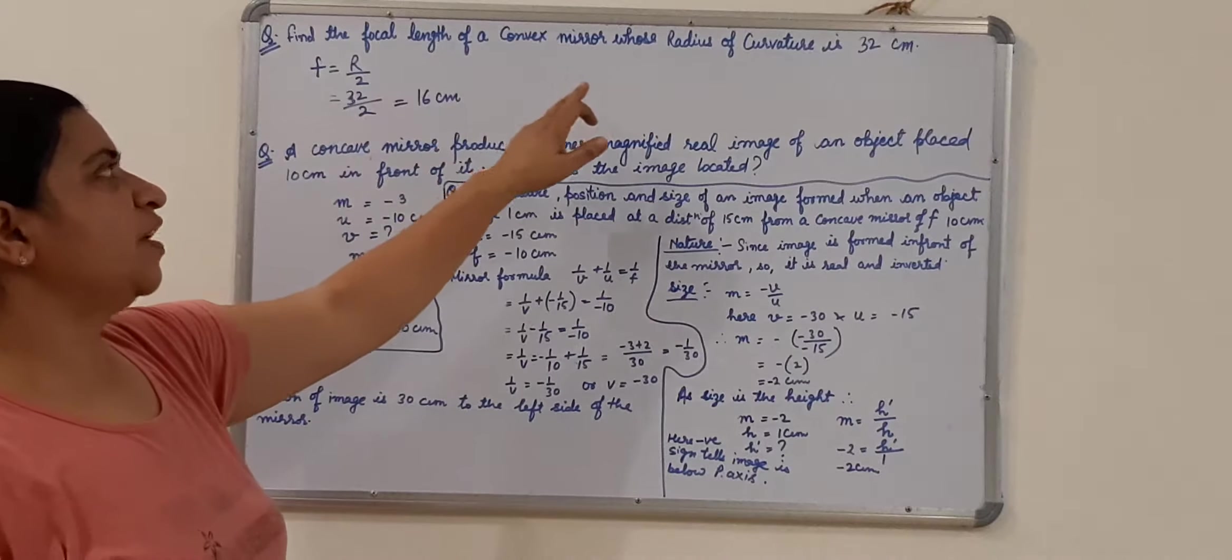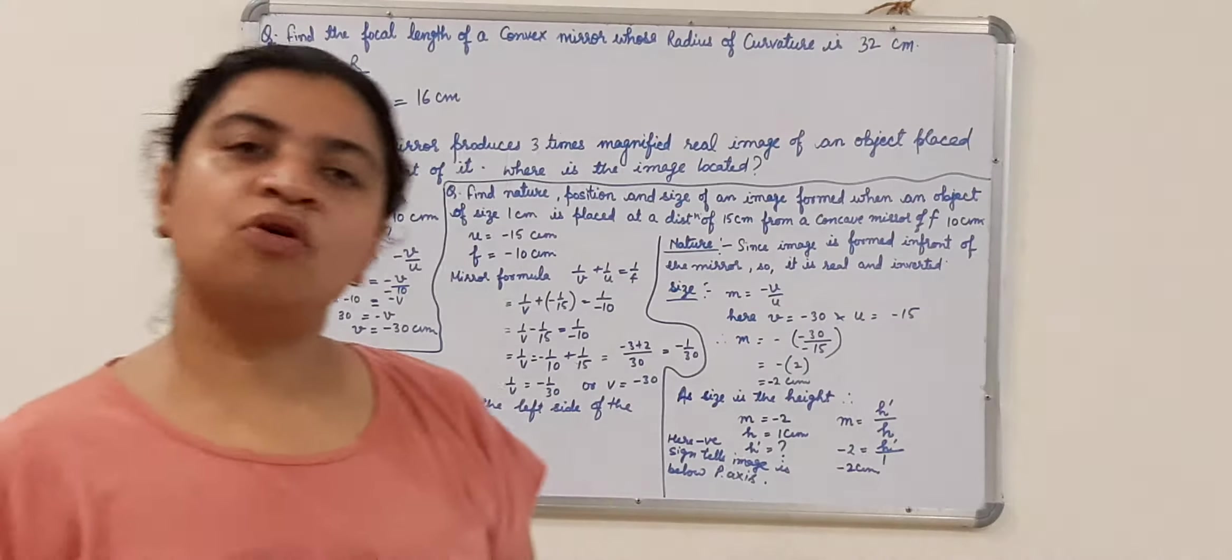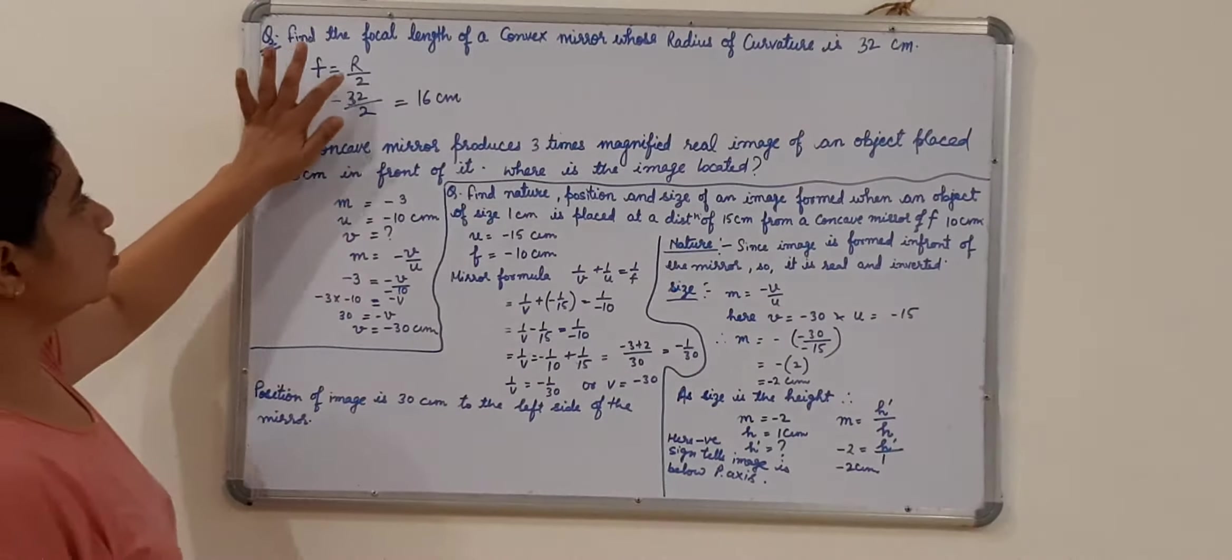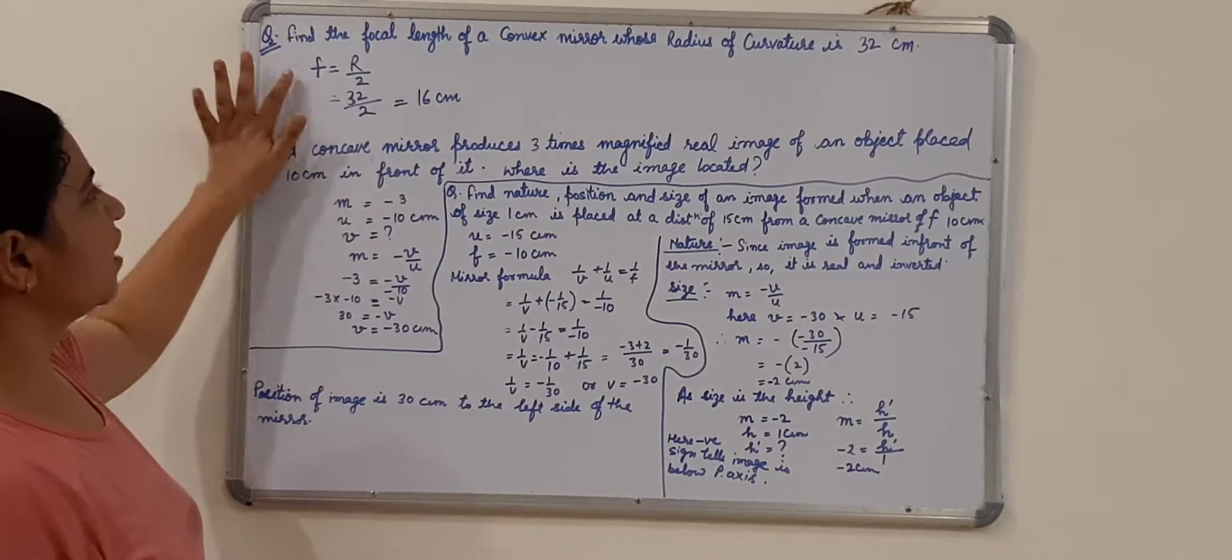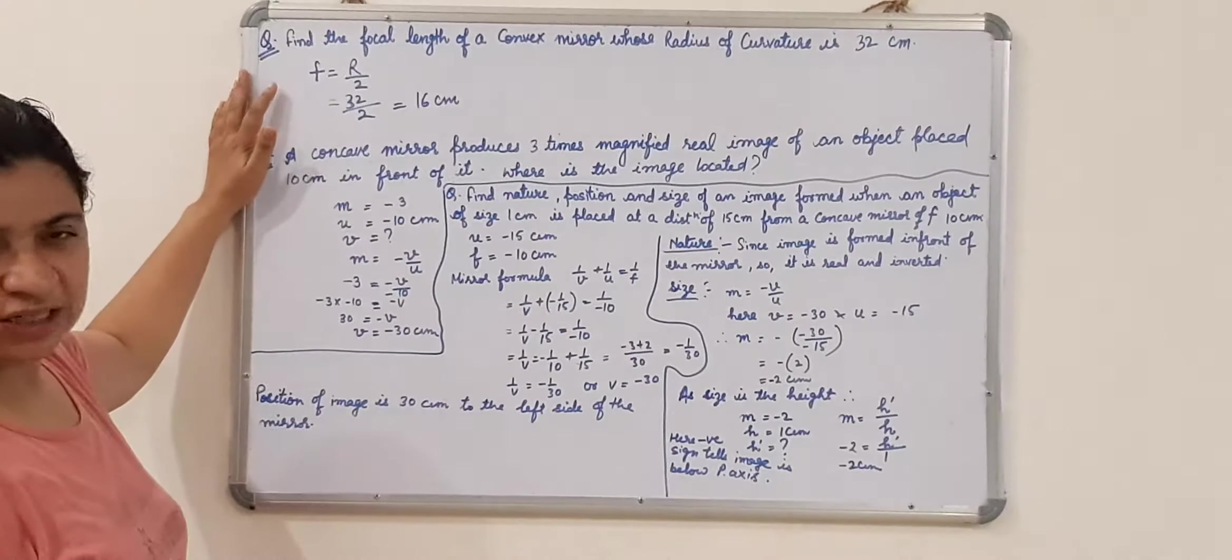Find the focal length of a convex mirror whose radius of curvature is 32 cm. We know that the focal length is the half of radius of curvature. So half of 32 is 16, so we get the focal length that is 16 cm. It's quite simple.